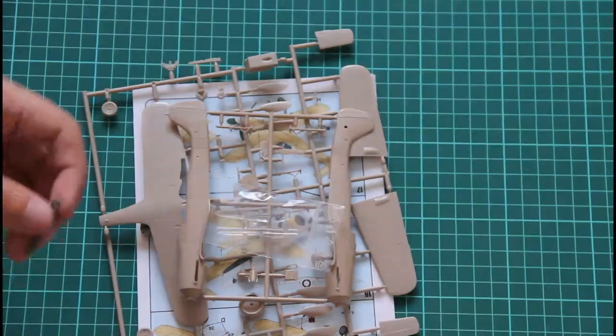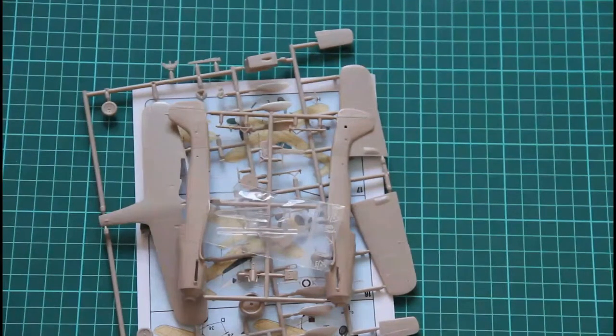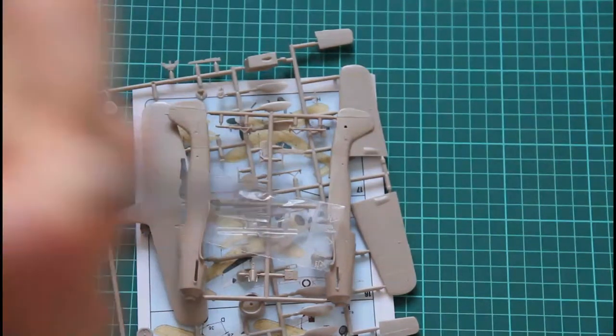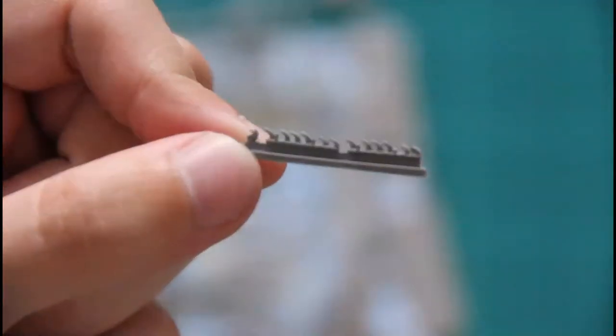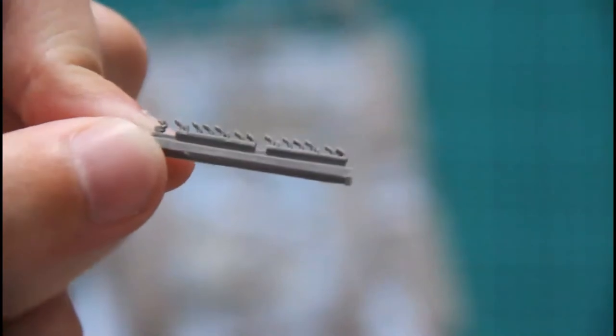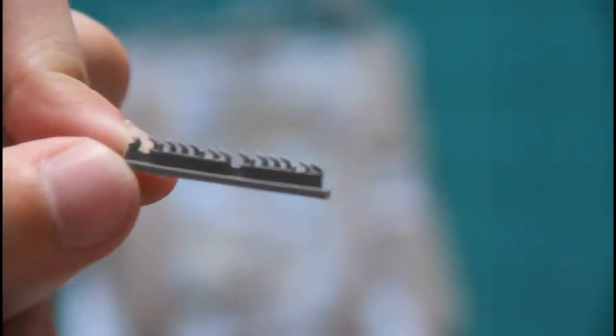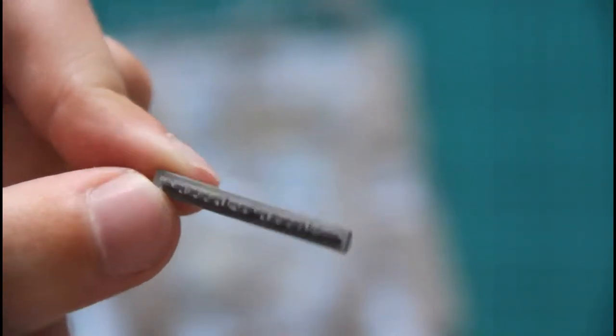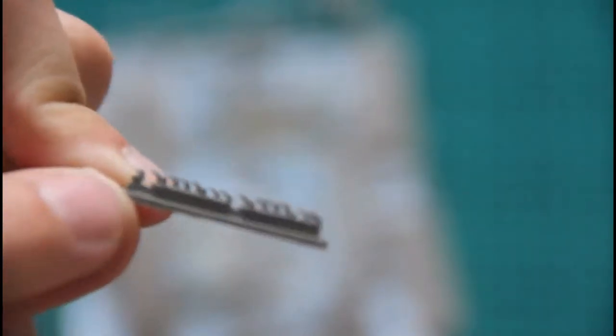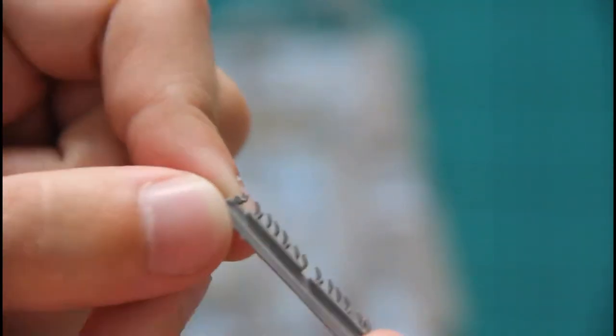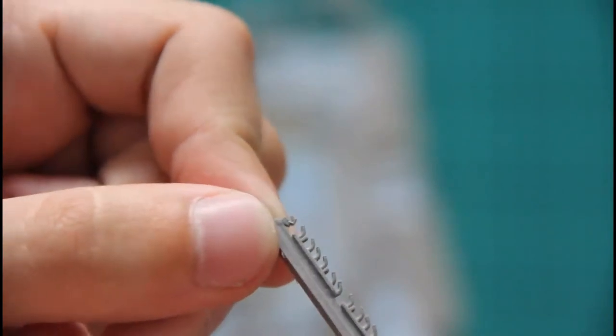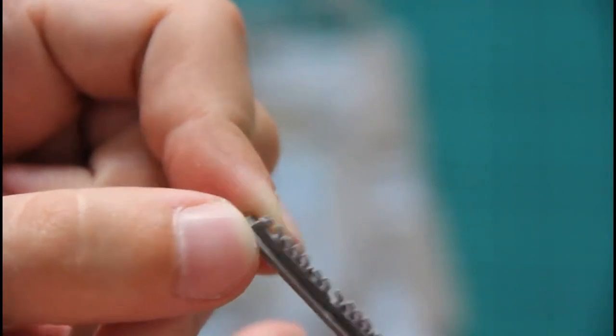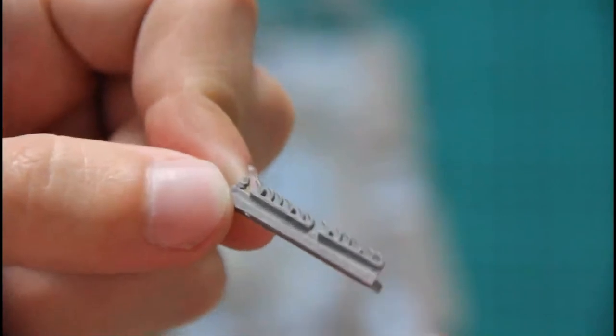This kit is interesting because it features improved exhausts. You can see them here. They are much better than the RV version. As you can see, they look more realistic. And also here is a gun sight which of course would be placed in the pilot cockpit. These are resin parts, just to remind.